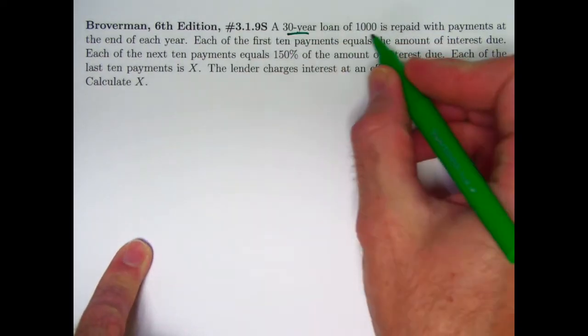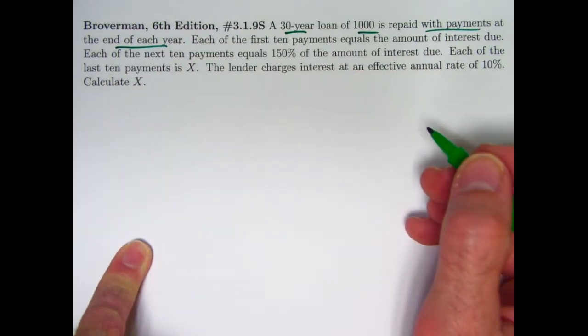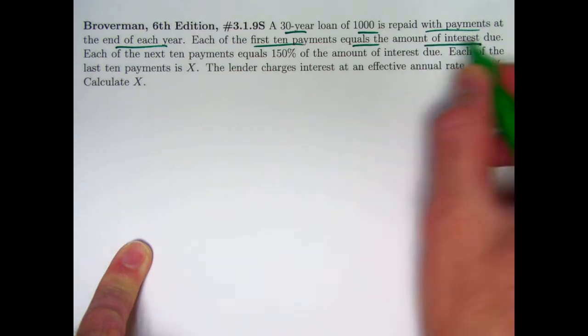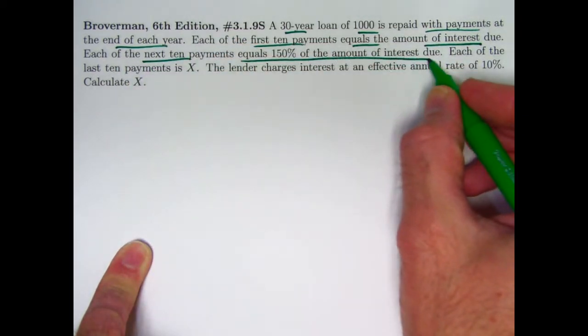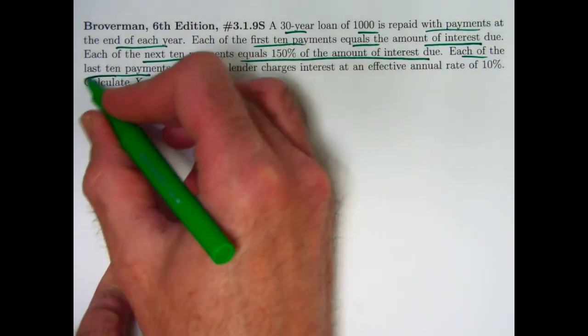So here we have a 30-year loan of $1,000. It's repaid with payments at the end of each year, so the payments form an annuity immediate. The first 10 payments equal the loan amount of interest due. The next 10 payments equal 150% of the amount of interest due, and each of the last 10 payments is X, and we want to find X.